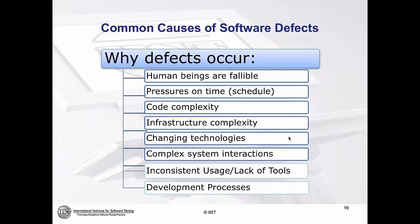So why do defects occur in the first place? Human beings are fallible. Humans make mistakes. Oftentimes we are tasked too heavily, asked to do things at the last minute, our schedules are hurried, we miss things, we're not involved in the project at the right time — and we make mistakes. That's one of the reasons why defects occur.